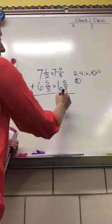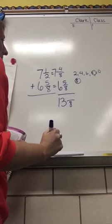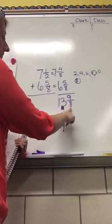I'm going to start by adding my whole numbers. My whole numbers are 7 plus 6, which is 13. Then I'm adding eighths. So my 8 denominator is going to go down and I have 4 plus 5 as my numerator. So 9 eighths.